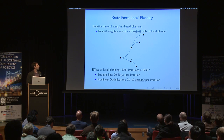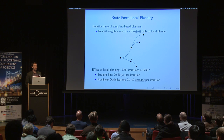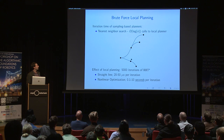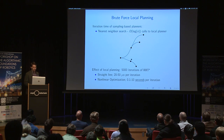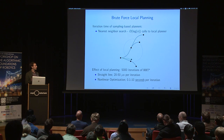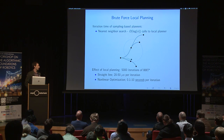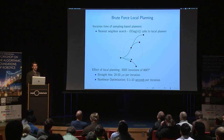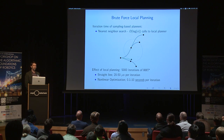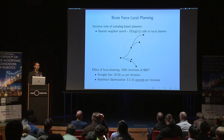The iteration time of sampling-based planners is generally dominated by a nearest neighbor search, which, if we're lucky, requires on the order of log N calls to the local planner where N is the iteration of the algorithm. In this context, the nearest neighbor is the vertex of the graph which can be extended to a sampled point with minimum cost, and it's not necessarily the point which is closest with respect to any particular metric. This can make it difficult to apply efficient nearest neighbor data structures like KD trees.